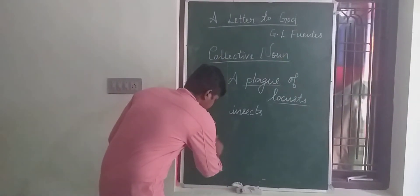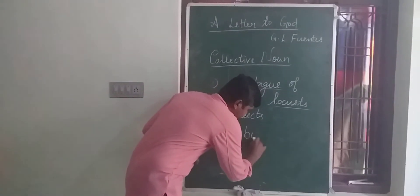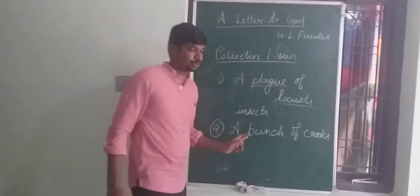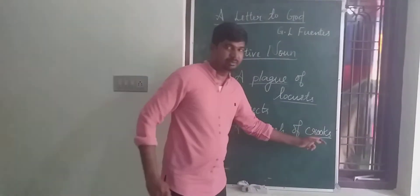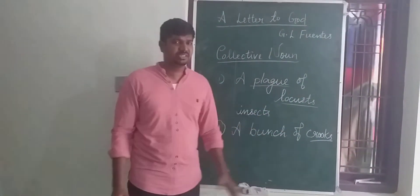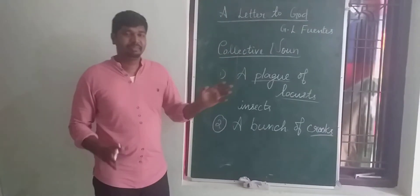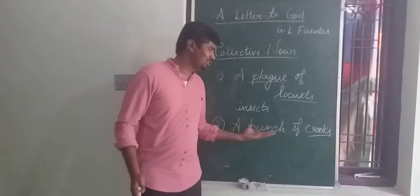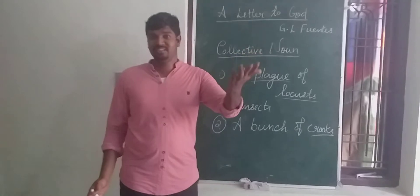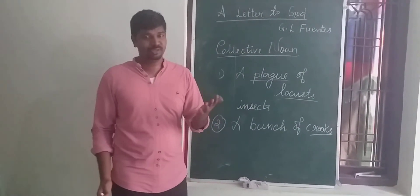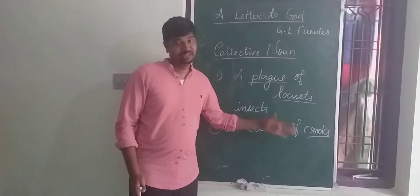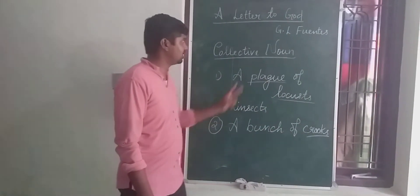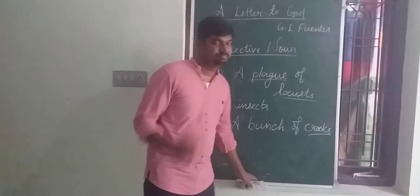The second collective noun is 'a bunch of crooks.' Crooks means a criminal or a cheater. According to Lencho, the people working in the post office are a bunch of crooks, because he suspected that they had taken the remaining 30 pesos. He received only 70 pesos whereas 30 were missing, so Lencho believed they were taken away by those crooks. So these are the two collective nouns used in this chapter.